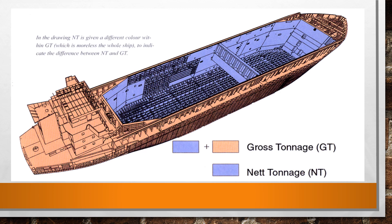If you look at the picture here, you can clearly see the areas included in the calculation of gross tonnage and the areas included in the calculation of net tonnage, shown by colour coding. The gross tonnage, also called GRT, is calculated using a formula that takes into account the ship's volume in cubic meters below the main deck and the enclosed spaces above the main deck. I will not go into the formula in this video, but I will provide a link to my previous video where I have shown the formula and how to calculate it.